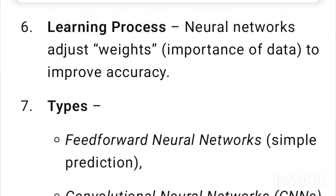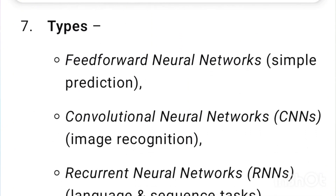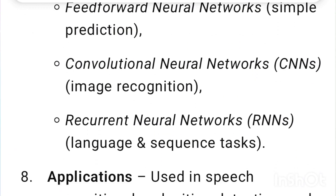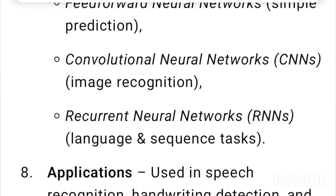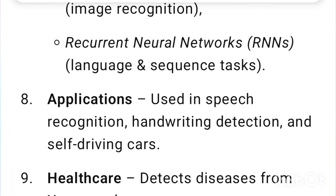Learning process: Neural networks adjust weights — the importance of data — to improve accuracy. Types: Feed-forward neural networks for simple prediction; Convolutional Neural Networks (CNNs) for image recognition; Recurrent Neural Networks (RNNs) for language and sequence tasks.